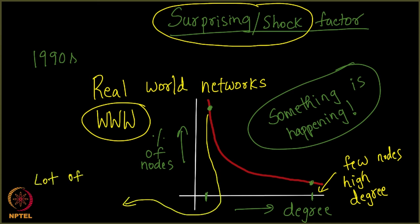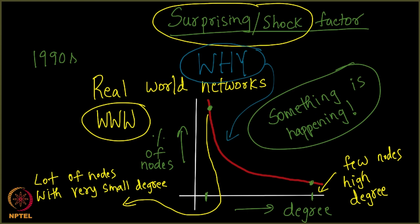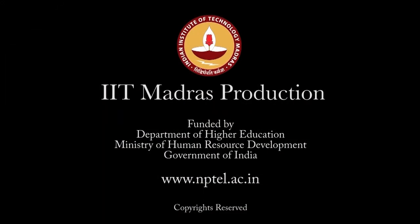There are a lot of nodes with very small degree. This startled the community of network scientists. They started wondering why is this property being seen? What is making this property emerge? Now is the right time for you all to pause the video and think about the question. Why is this happening? The big why? Why is it that we are not able to see a normal distribution here? Why are we seeing a drop in the curve like this?